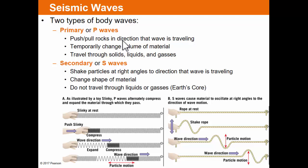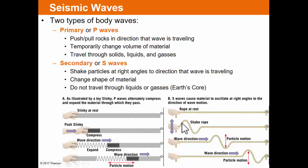S waves won't travel through the Earth's core — this is one of the primary ways we learned that the Earth's outer core is liquid, because those secondary waves create a shadow zone where they don't appear. P waves have compression parallel to the wave's movement direction, while S waves (shear waves) have movement at a right angle to the wave direction.